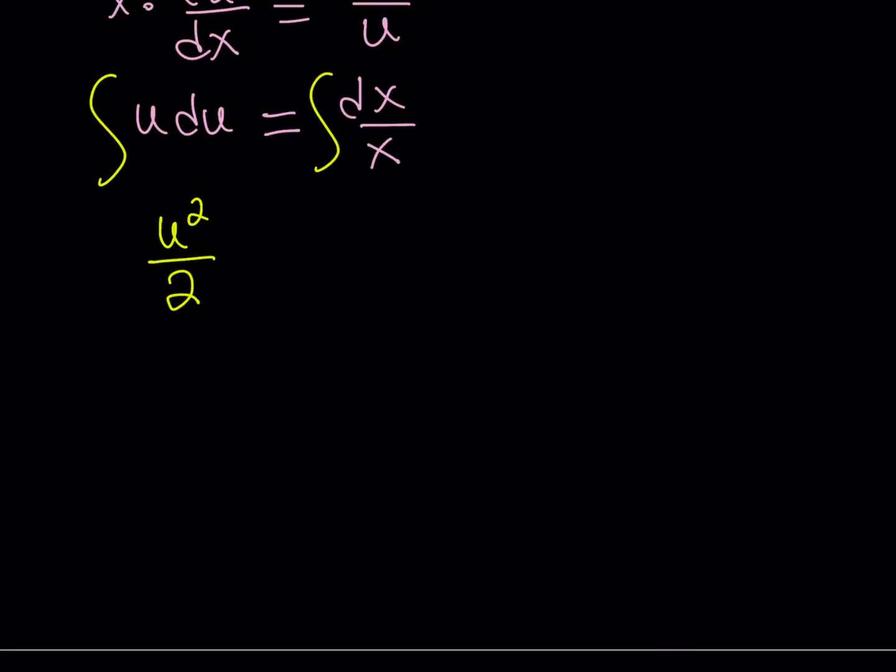If you're integrating u du, you look at the exponent, and hopefully it's not negative 1. You increase it by 1, and then whatever number you get, you divide by that. Simple, fairly easy power rule. It's basically what you learn for differentiation, you reverse it.